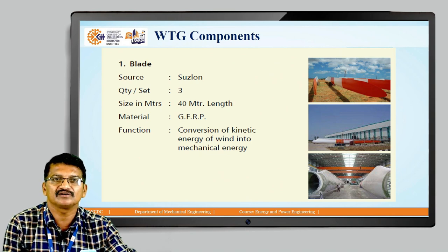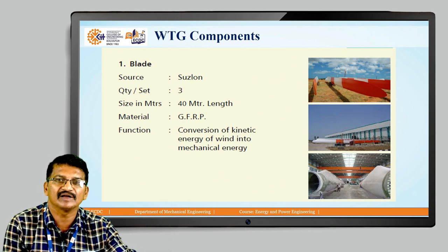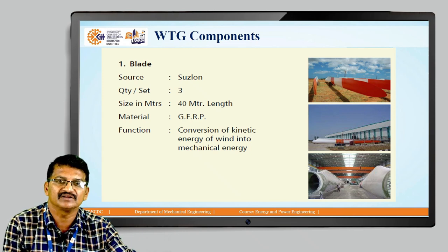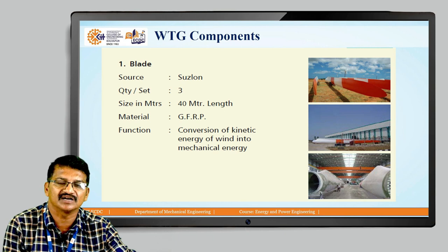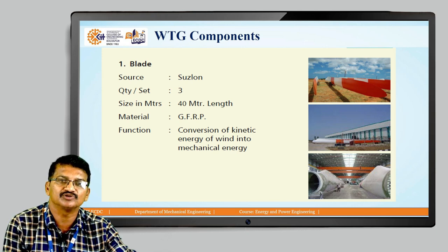The components of the wind turbine generator include the blade. The major function of the blade — made of glass fiber reinforced plastic — is the conversion of kinetic energy of wind into mechanical energy. As seen in the diagram, the blades are really large because a greater area directly gives greater power.